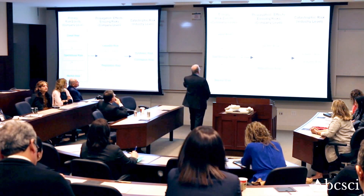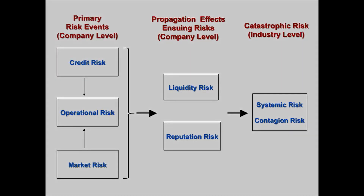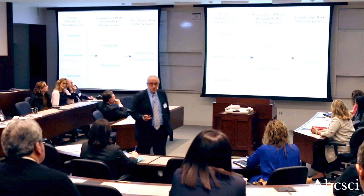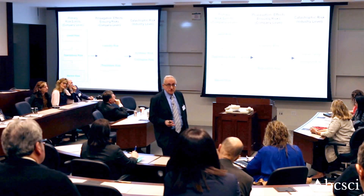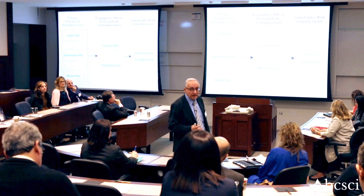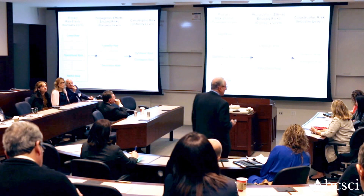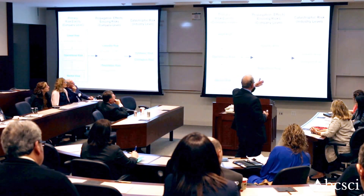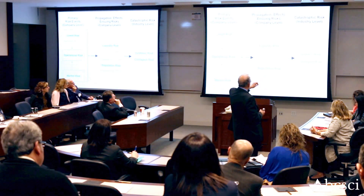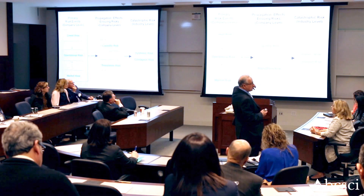The primary risk events on a company level are these three risks. I come from an operations management area, and I think ops risk is the most important. There are some propagation effects of these risk events — if there is too much risk and things don't go your way, there can be liquidity risks or reputation risk.